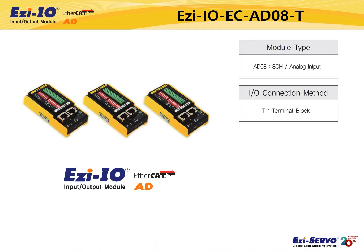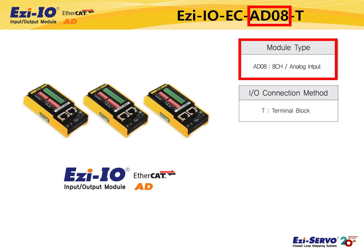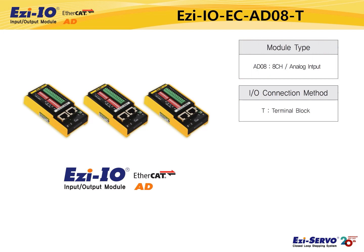First of all, I will explain the combination model name of the Easy IO EtherCAT-AD product. In the example model name, IO means input and output module, and EC means the product uses the EtherCAT network. AD08 means the product supports eight analog input channels, and T means that a terminal block is applied.